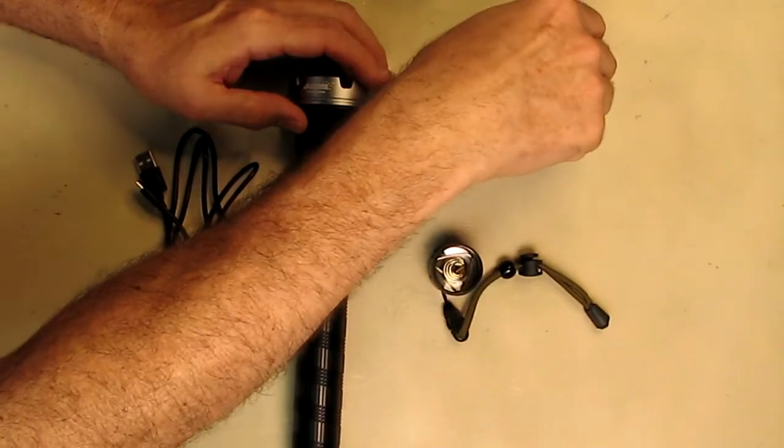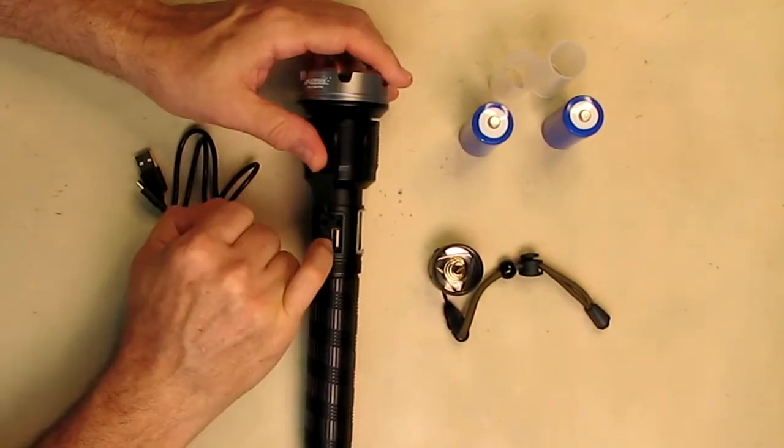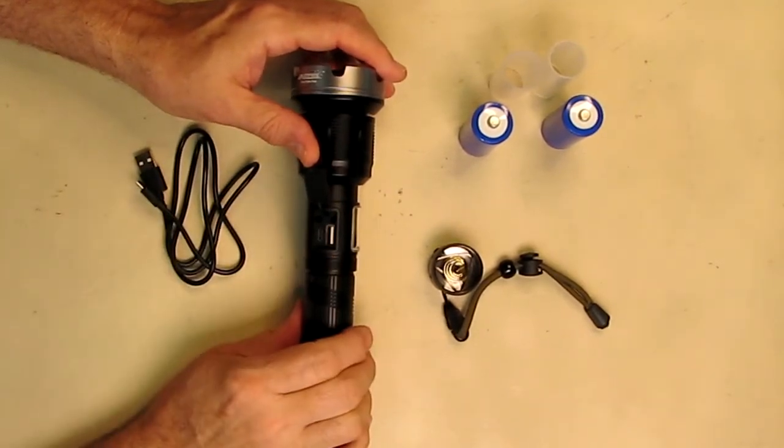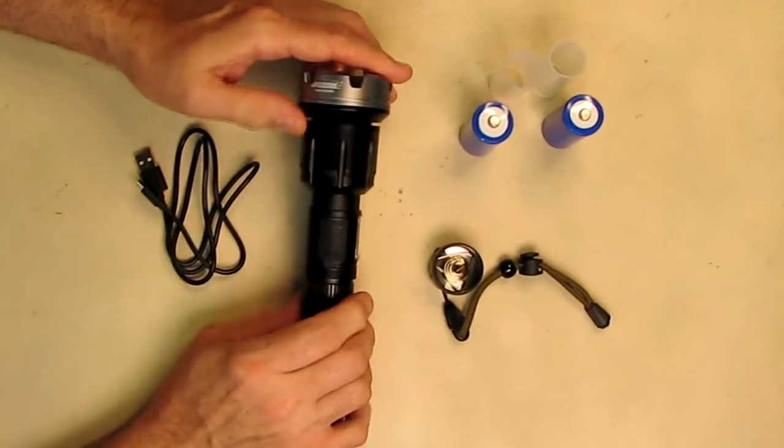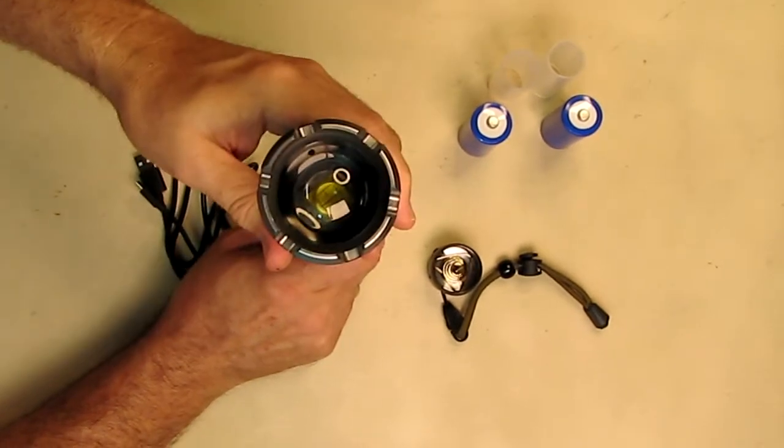There's a charging port right there with a micro USB and an output port of USB type A that you could charge things with, and a nice cover to keep this thing water resistant. The zoom is really impressive.